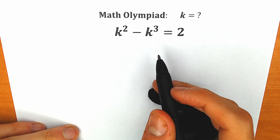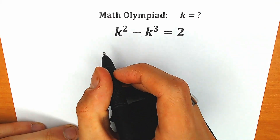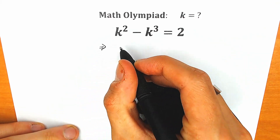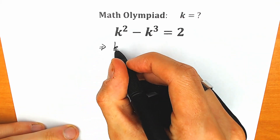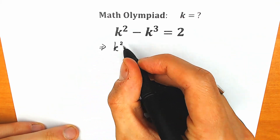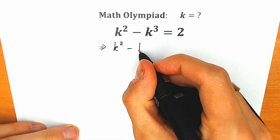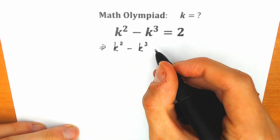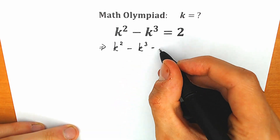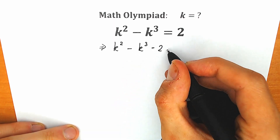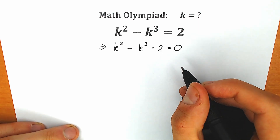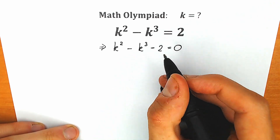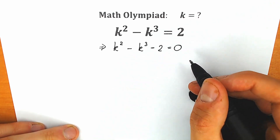So first of all, I want to subtract 2 from both sides. As a result, we will have k squared minus k cubed on the left side, and we have minus 2 equal to zero. I really hope you understand this first step.